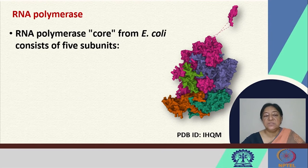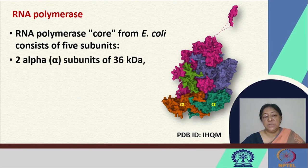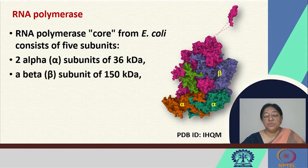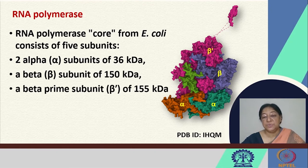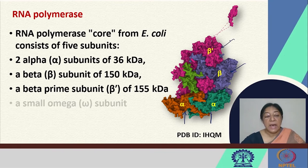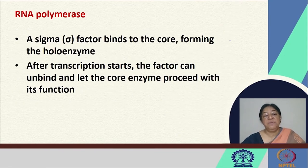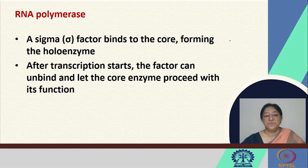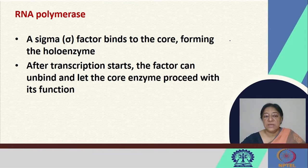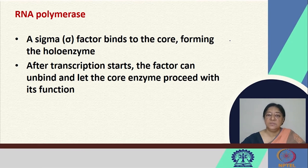The RNA polymerase core from E. coli consists of five subunits: two alpha subunits of 36 kilodaltons each, a beta subunit of 150 kilodaltons, a beta prime subunit, and a small omega subunit. A sigma factor that binds to the core forms the holoenzyme. After transcription begins, the sigma factor unbinds and lets the core enzyme proceed with the synthesis of RNA from DNA.